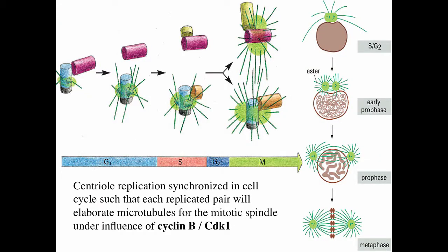I want to remind you that centriole replication is synchronized in the cell cycle such that each replicated pair of centrioles elaborates microtubules for the mitotic spindle under the influence of cyclin B-CDK1. You can see that the spindles have replicated and are beginning to move apart in early prophase so that by the time the nuclear envelope is broken down, the spindle is forming at metaphase and the centrioles are on opposite poles.